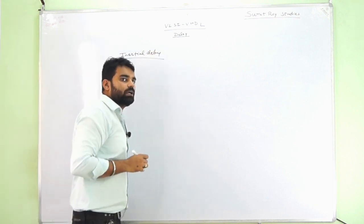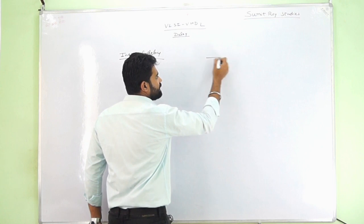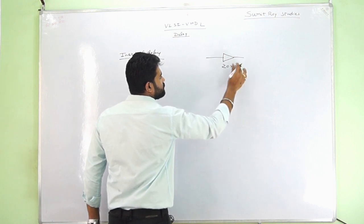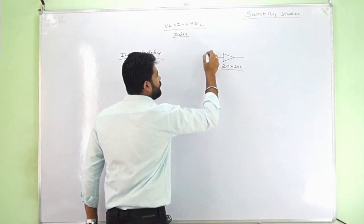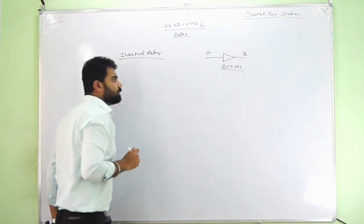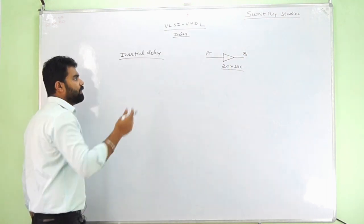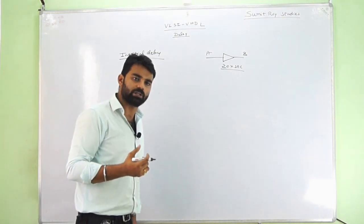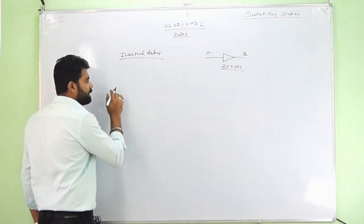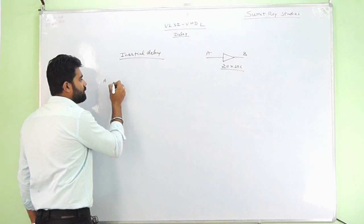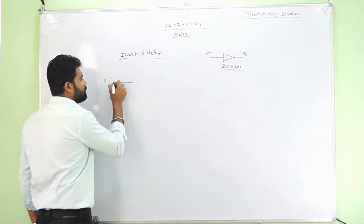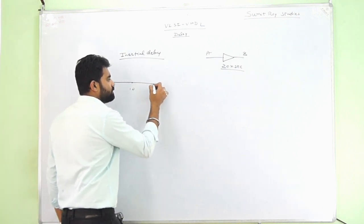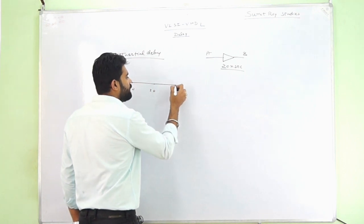As it is a default delay, I will start with an example. Let us say a buffer having a 20 nanoseconds delay. A and B — it's just a simple buffer and whatever is the input, the same is the output but transferred after 20 nanoseconds. So if I take an example, let A be at 0 nanoseconds, 10 nanoseconds, 20 nanoseconds, and 30 nanoseconds.